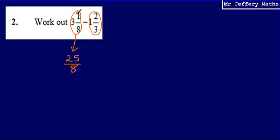So I can say that 3 wholes and 1 eighth would be the same as having 25 eighths. Doing the same for the second mixed number, 3 multiplied by 1 gives me 3, add on the 2 gives me 5 thirds.